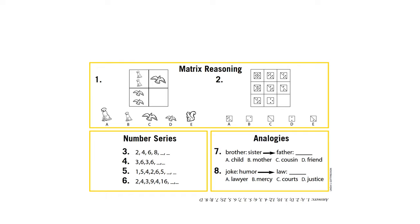Another test uses animals — if you have two dogs then one bird, if you have two birds then what comes next? Then there are number series — the next number in the row. Or analogies: a brother is to sister like a father is to something, or a joke is to humor like law is to something. All this stuff is testing intelligence.